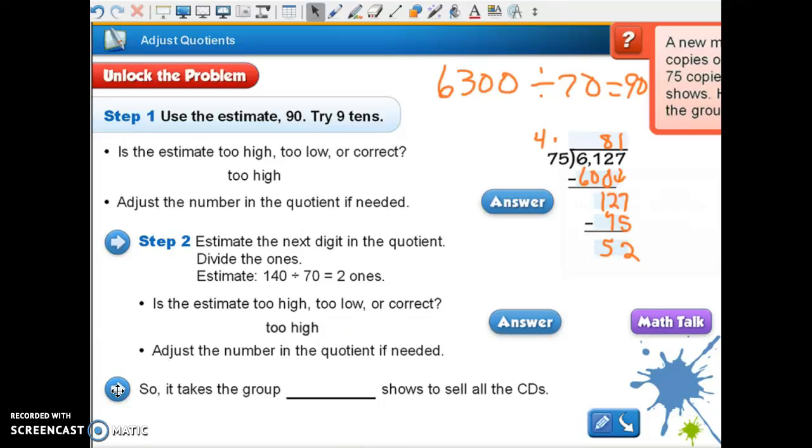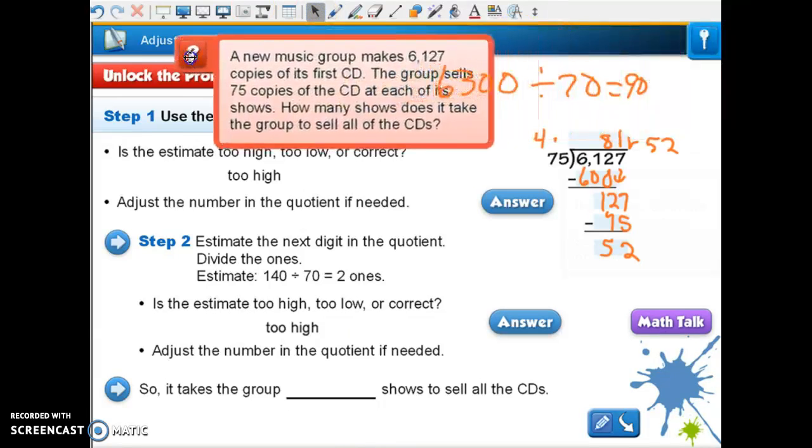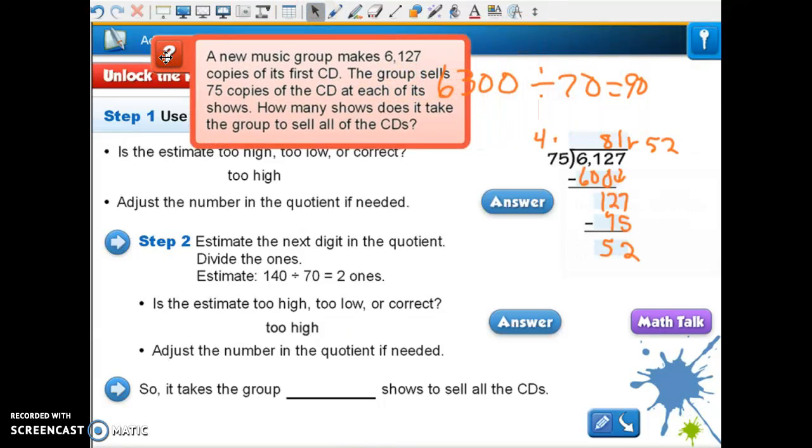Go lower, and 1 times 5 is 5 and 1 times 7 is 7. When we subtract we get 2, and 12 minus 7 is 5. Can I divide 52 equally among 75 groups? No, I certainly can't. So how many shows? Now I have a remainder. How many shows is it going to take them to sell all of their CDs?